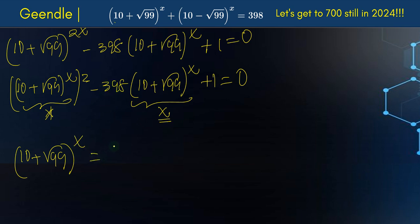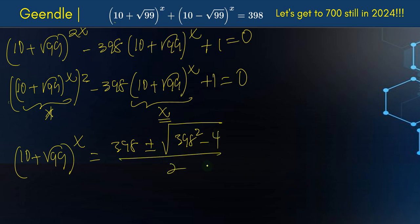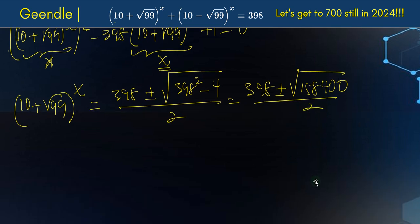So we have the quadratic formula: minus B — so we have 398 — plus or minus the square root of B², which is 398², minus 4 times A times C, where A = 1 and C = 1, so minus 4. All divided by 2. So we get 398, then plus or minus — this number under the radical will be 158,400 — all divided by 2.